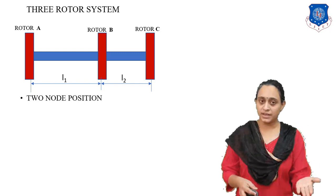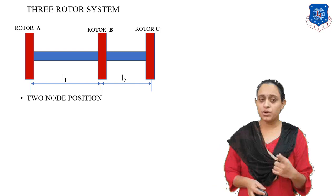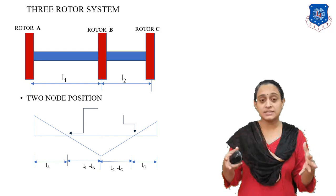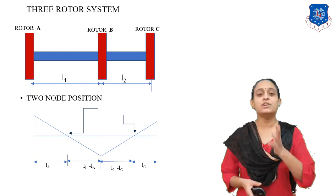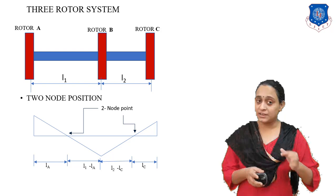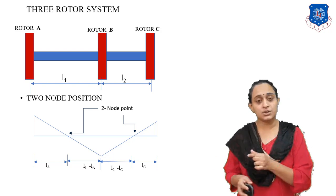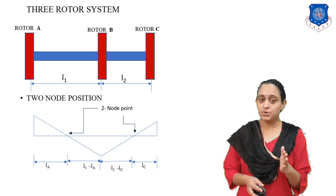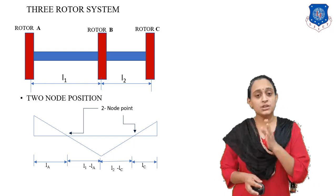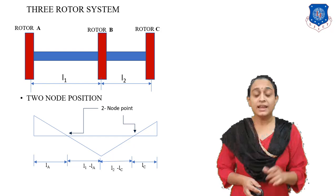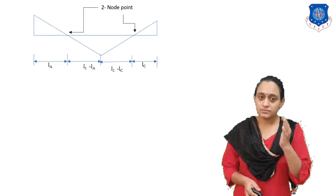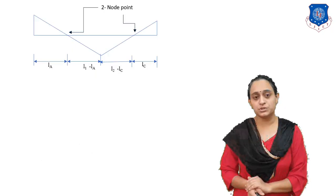Let our three rotors be rotor A, rotor B, and rotor C. First we have to calculate for two node position. For the two node position, assume rotor A and C rotate in the same direction and rotor B rotates in the opposite direction. Between A and B we get one node position, and between B and C we get another node position. The nodal point length from rotor A is L_A, and from rotor C is L_C. The remaining lengths are L1 minus L_A and L2 minus L_C.